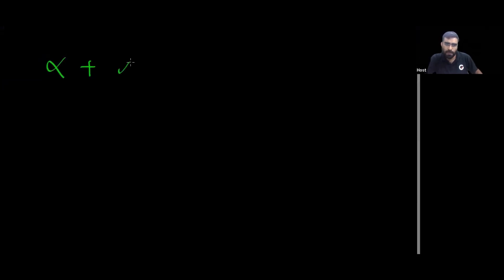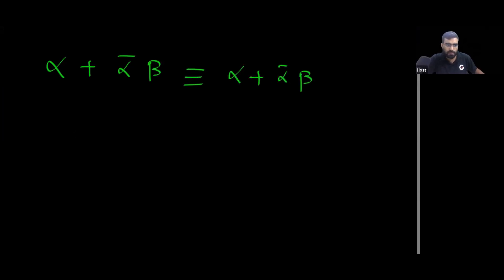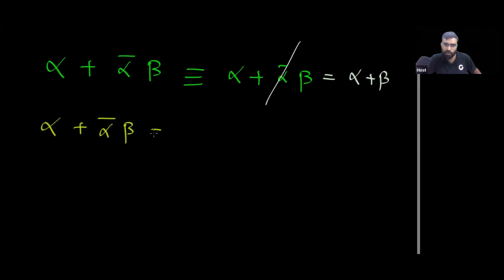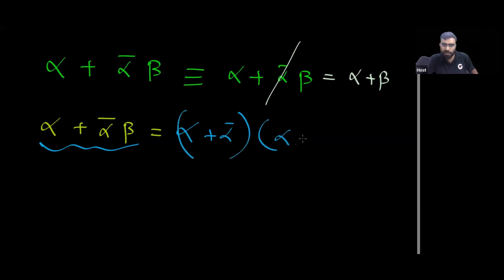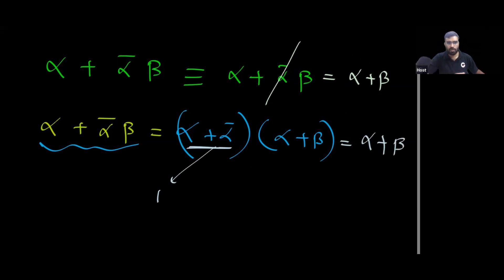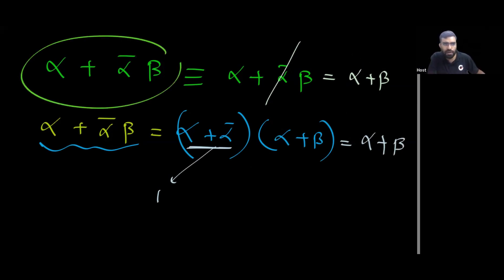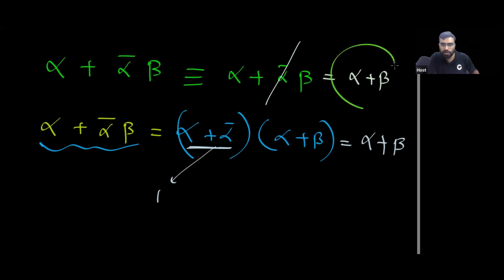There is a useful Boolean rule: α OR ᾱβ can be simplified. Applying the distributive property: α OR ᾱβ = (α OR ᾱ)·(α OR β) = 1·(α OR β) = α OR β. So whenever you have α OR ᾱβ, you can remove the ᾱ term and simply write α OR β.